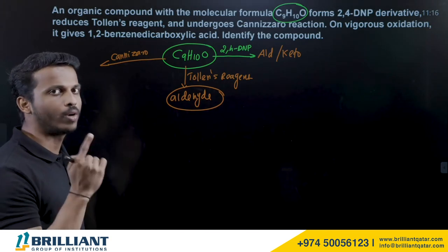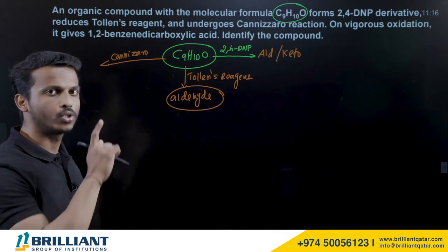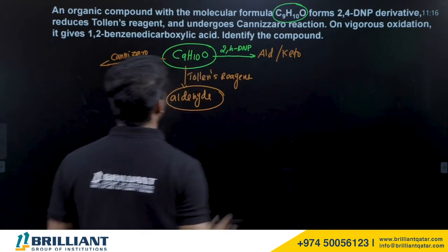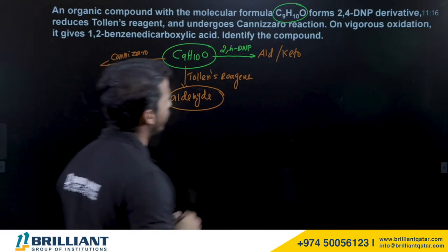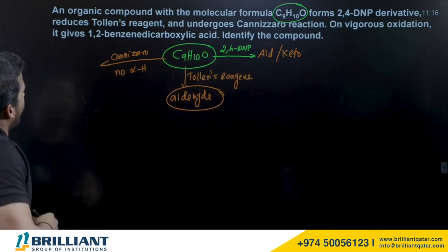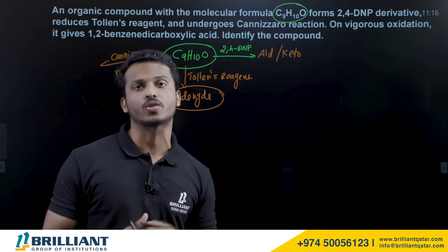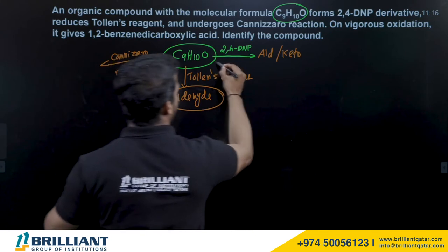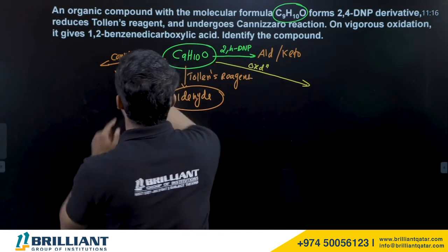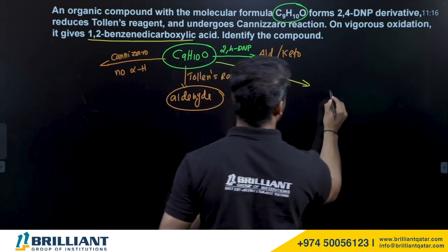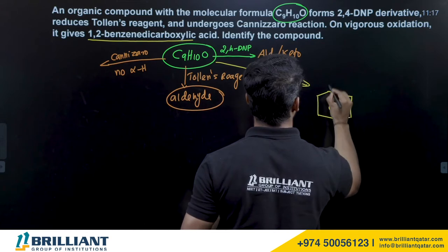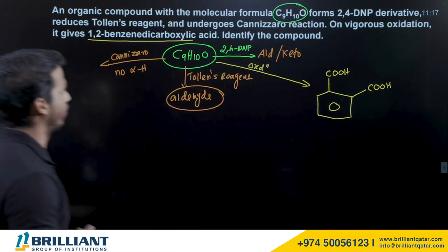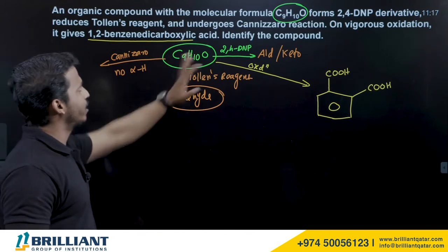It also undergoes Cannizzaro's reaction, which requires no alpha hydrogen in the aldehyde. On vigorous oxidation with alkaline KMnO4, it gives 1,2-benzenedicarboxylic acid (phthalic acid), confirming the compound contains a benzene ring with substituents at the 1 and 2 positions.